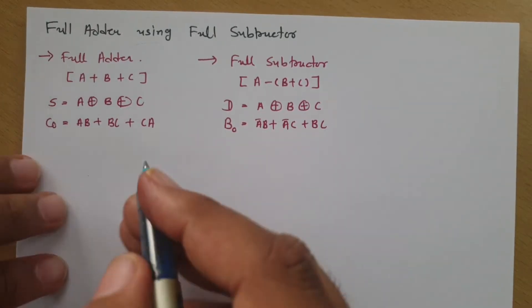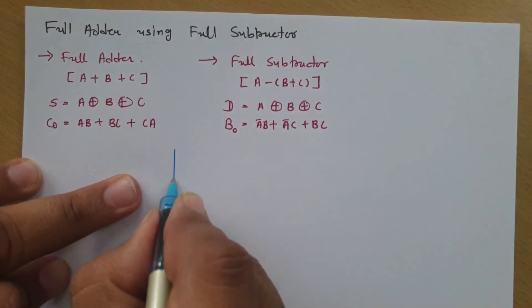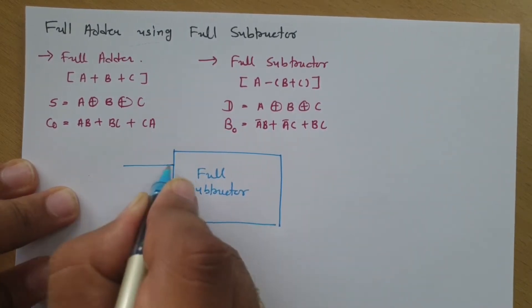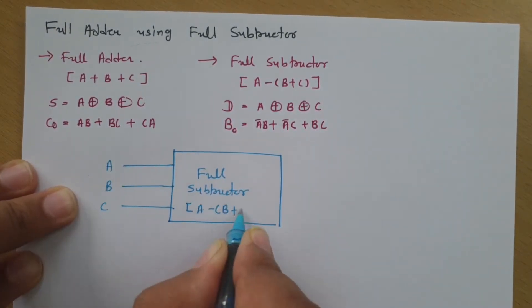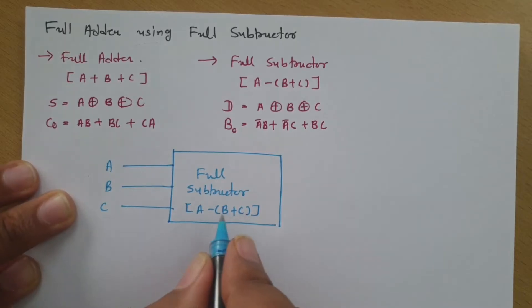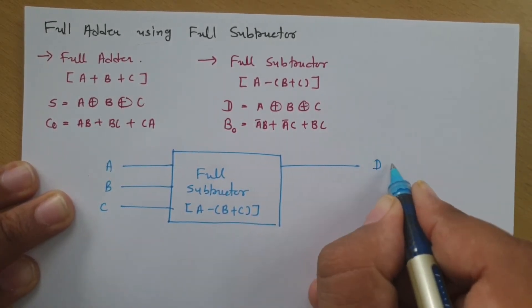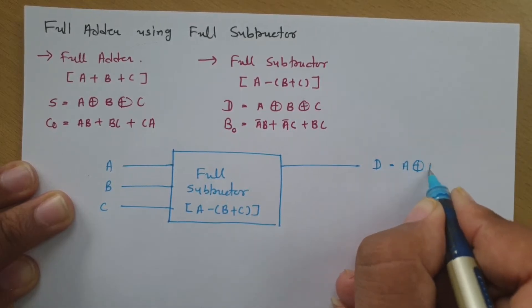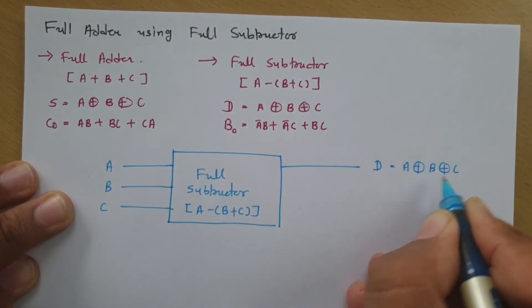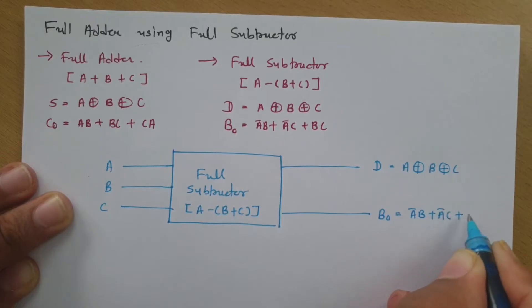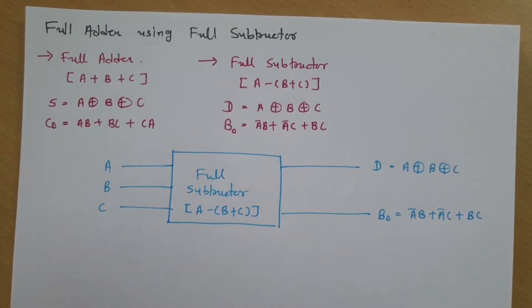So, here if I say I have full subtractor right now over here, let us say we have 3 inputs. And it performs A minus B plus C. Then here difference that will be A XOR B XOR C and here this borrow will be A bar B plus A bar C plus BC.